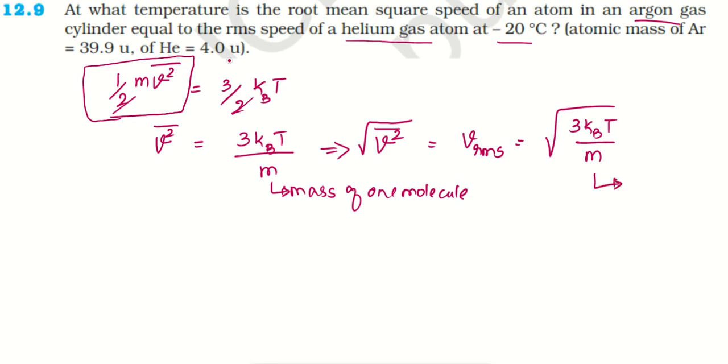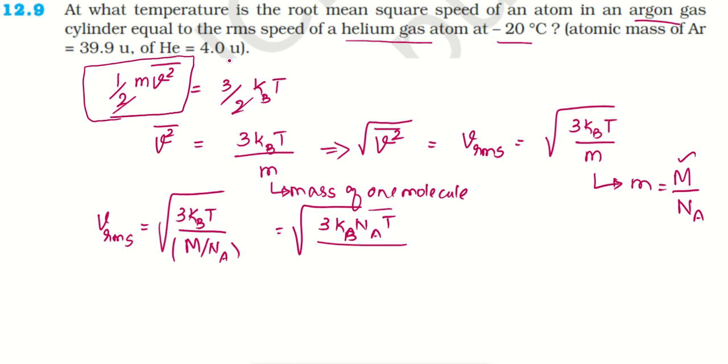Now this M we can write as molecular mass divided by NA. This is what is given for argon gas and helium gas. So VRMS equals square root of 3KBNAT divided by M, which we can write as square root of 3RT divided by M.